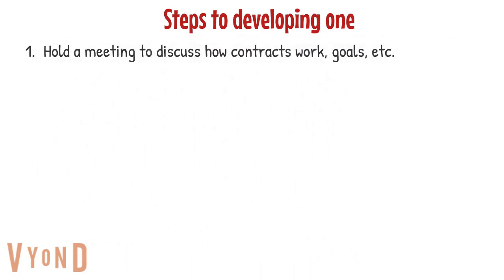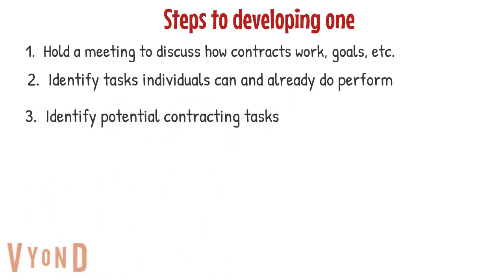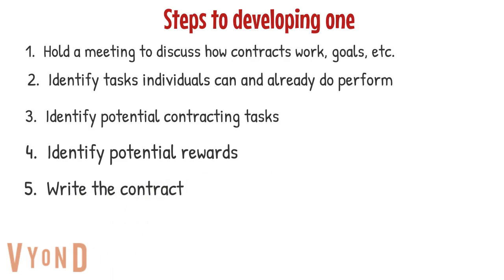Steps to developing a contingency contract include the following: first, hold a meeting to discuss how the contract works and goals; second, identify tasks the individuals can and already do perform; third, identify potential contracting tasks; fourth, identify potential rewards; and lastly, write the contract.